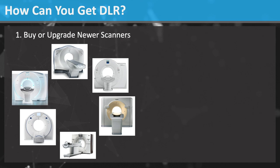If you are now interested in DLR for CT image reconstruction, and you should be, you might be wondering how you can get it. There are two main options. GE and Canon Medical offer this technology on their most recent scanners. You may be able to upgrade your scanners if you had a recent purchase or if you are planning your next purchase. This is likely an expensive approach.